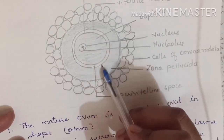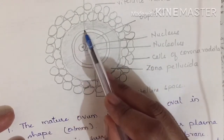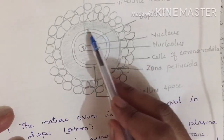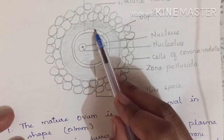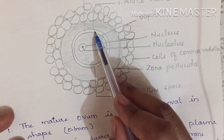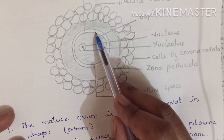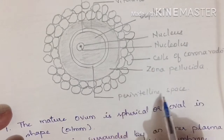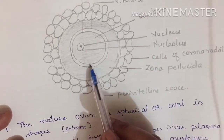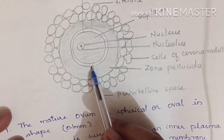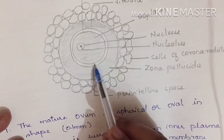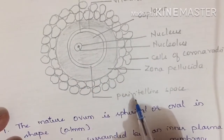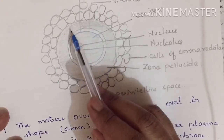The second layer around the plasma membrane is called the vitelline membrane. The space between the plasma membrane and the vitelline membrane is called the perivitelline space, as shown here.